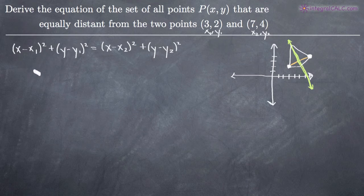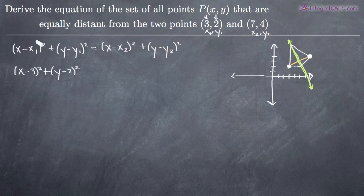Now we can just go ahead and plug those things into our formula. So we have (x-3)² + (y-2)². So we just took these two points here, 3 and 2, and plugged them in for x₁ and y₁.